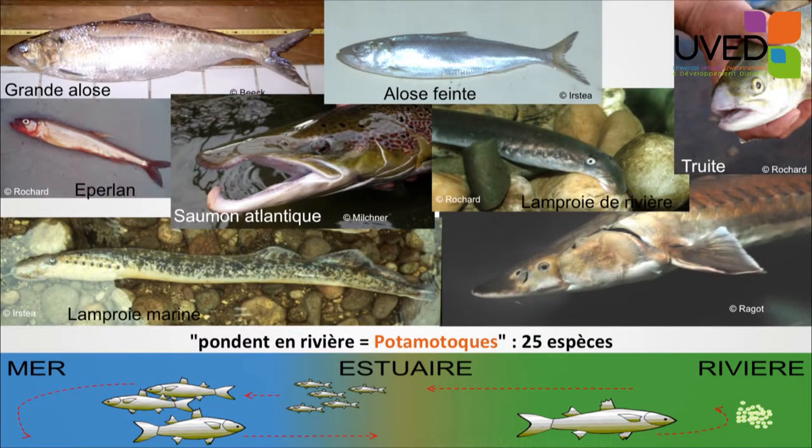In Europe we can find 28 species of two different types. The first type are species that reproduce in freshwater in the rivers, and the young fishes grow in the river then cross the estuary and finish growing in the marine environment. When they come close to sexual maturity, they will cross the estuary again and go back to the river to reproduce.